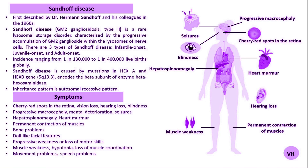Sandhoff disease is diagnosed through a combination of clinical evaluation, biochemical and genetic tests, and molecular genetic tests. A doctor will diagnose Sandhoff disease by assessing symptoms such as progressive neurological impairment, developmental delay, seizures, vision and hearing loss, and an exaggerated startle response to noise. CT or MRI imaging of the brain is performed to look for signs of cerebral atrophy, increased density in the thalamus, and white matter changes.